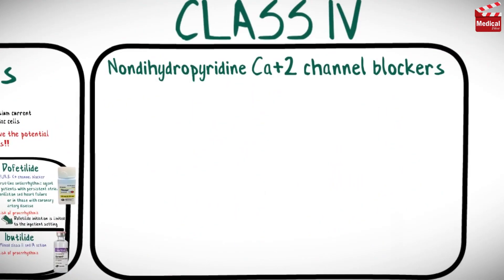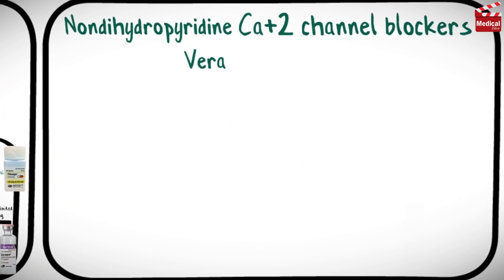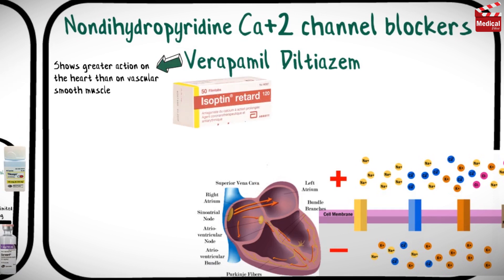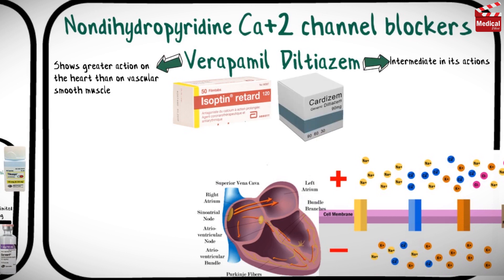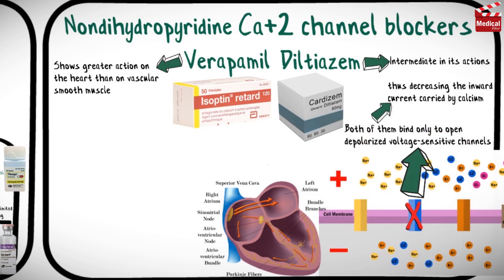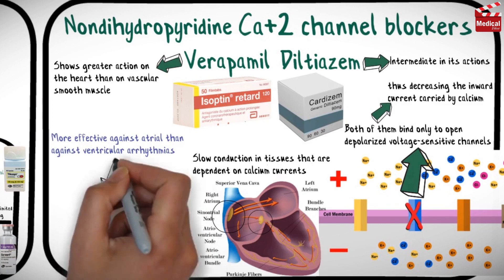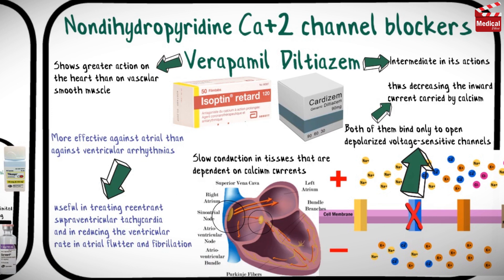Class 4 drugs are the non-dihydropyridine calcium channel blockers, verapamil and diltiazem. Verapamil shows greater action on the heart than on vascular smooth muscle, and diltiazem is intermediate in its actions. Both bind only to open depolarized voltage-sensitive channels, thus decreasing the inward current carried by calcium, preventing repolarization until the drug dissociates from the channel. They slow conduction in tissues dependent on calcium currents, such as the SA and AV nodes. These agents are more effective against atrial than ventricular arrhythmias, useful in treating reentrant supraventricular tachycardia and reducing the ventricular rate in atrial flutter and fibrillation.